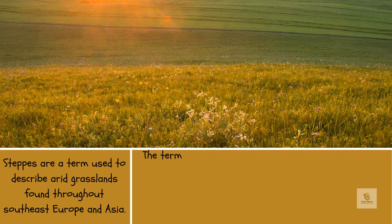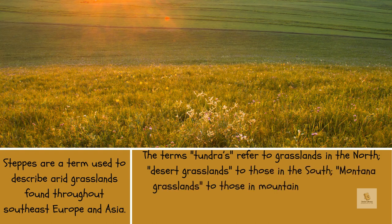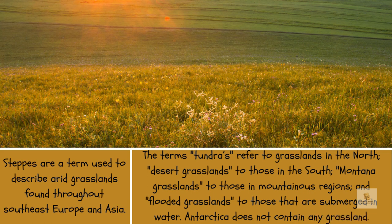The terms tundras refer to grasslands in the north, desert grasslands to those in the south, montane grasslands to those in mountainous regions, and flooded grasslands to those that are submerged in water. Antarctica does not contain any grasslands.